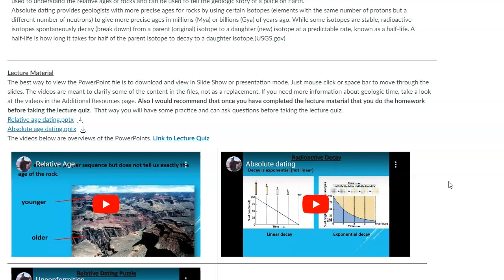The first is what we're going to call relative age dating. This is where we can put things in order without knowing their numerical value or their actual age. We're doing things relative to each other. It'd be like saying somebody is older than you. You don't know their exact age, but you know they're older than you. That's a relative age kind of situation.